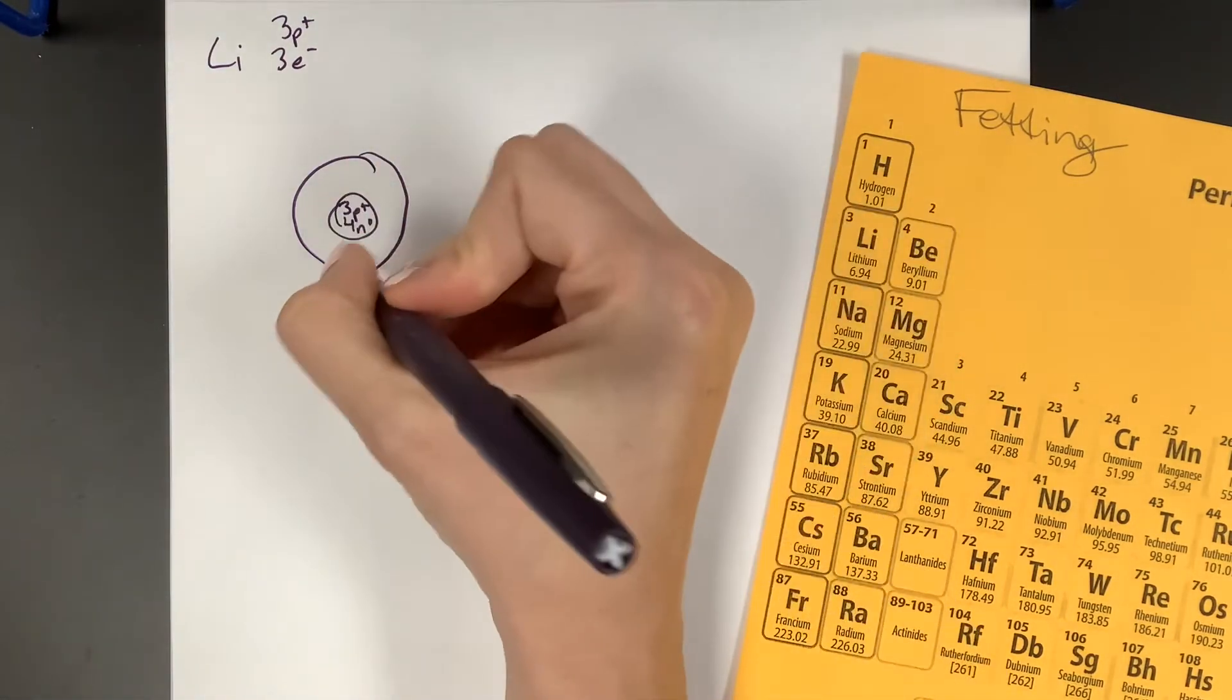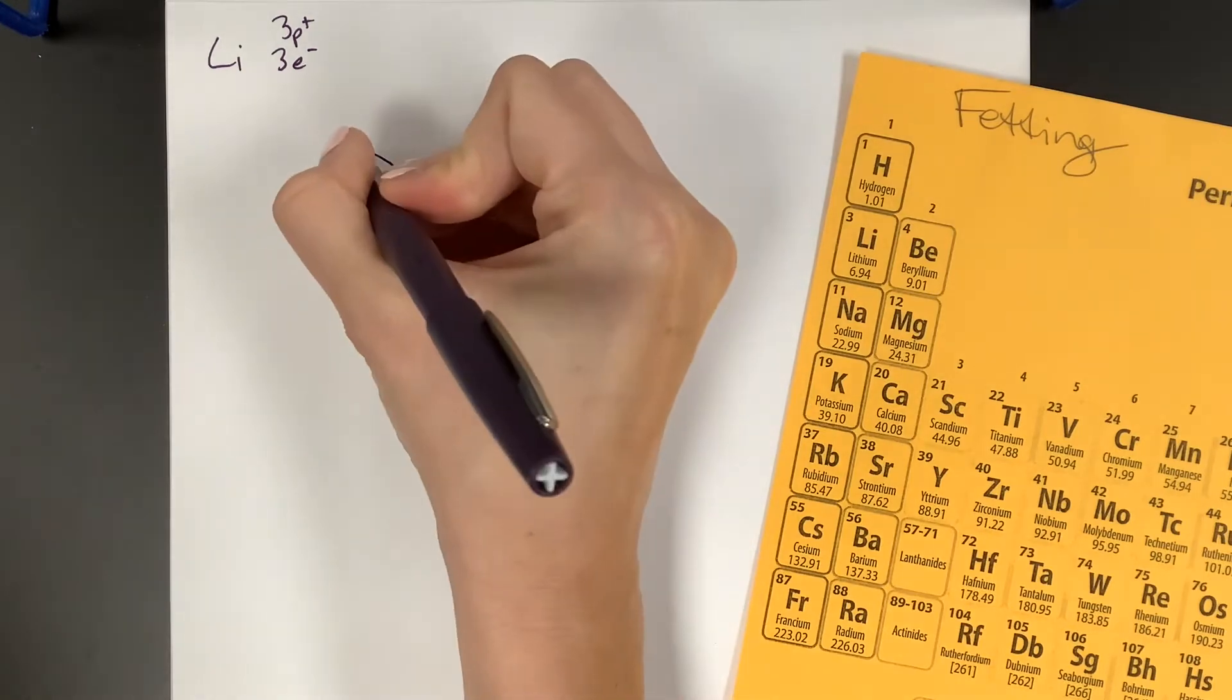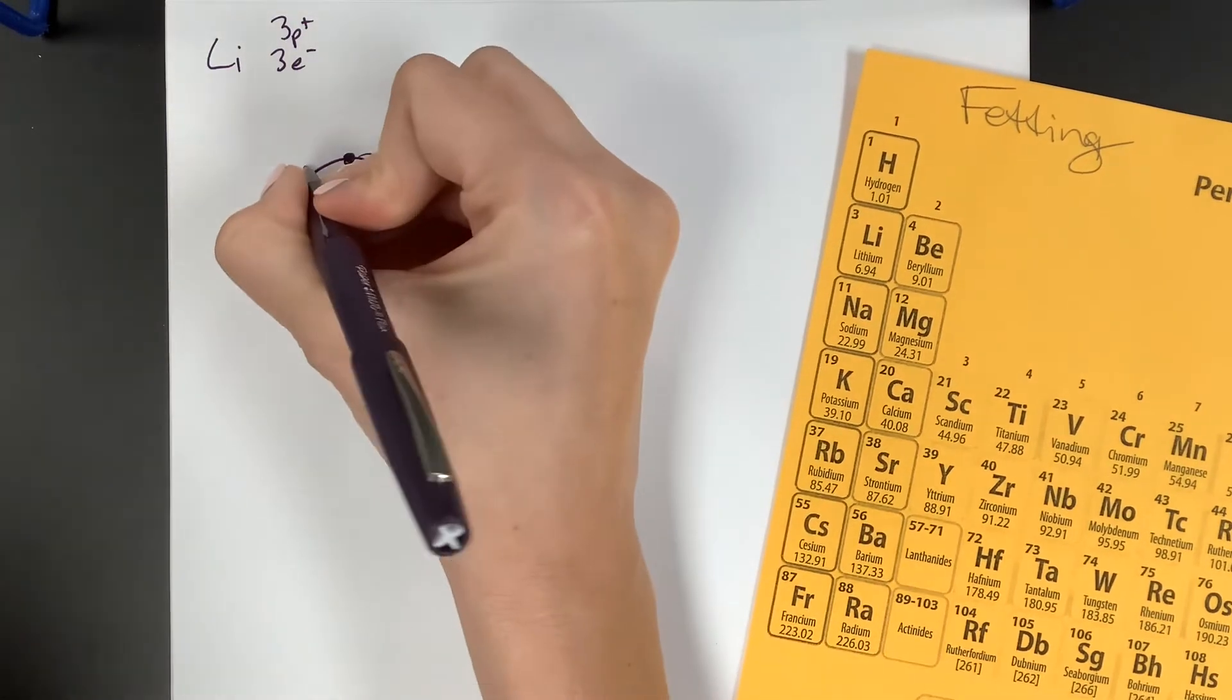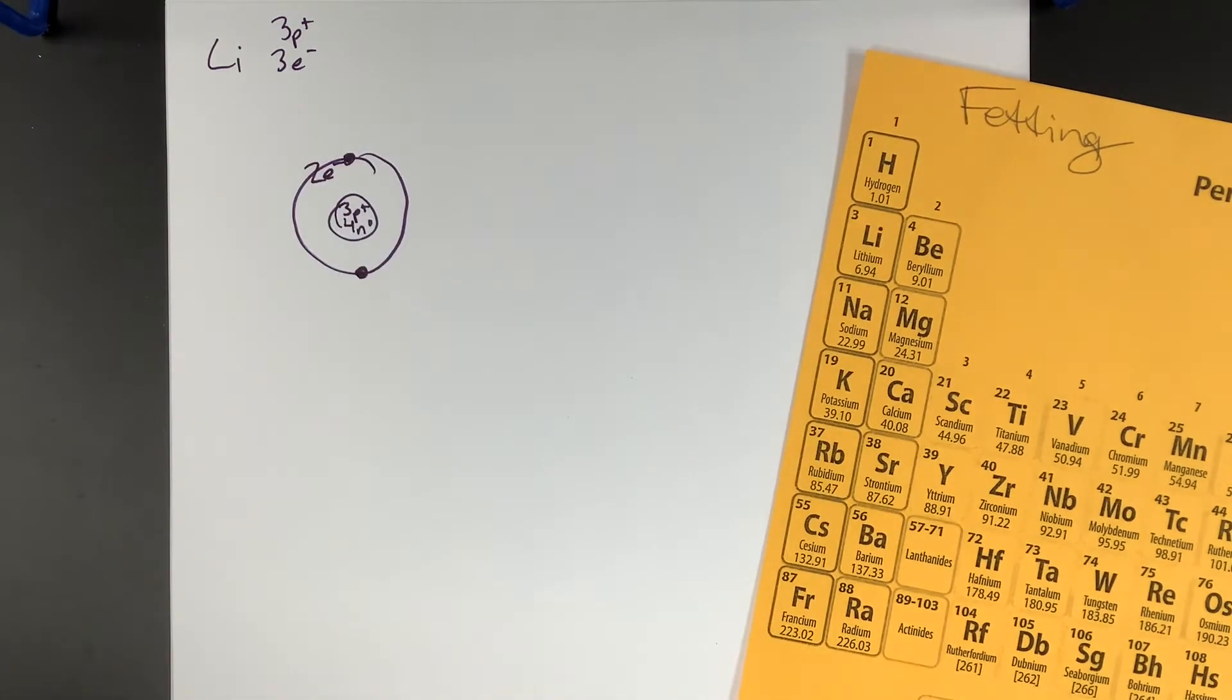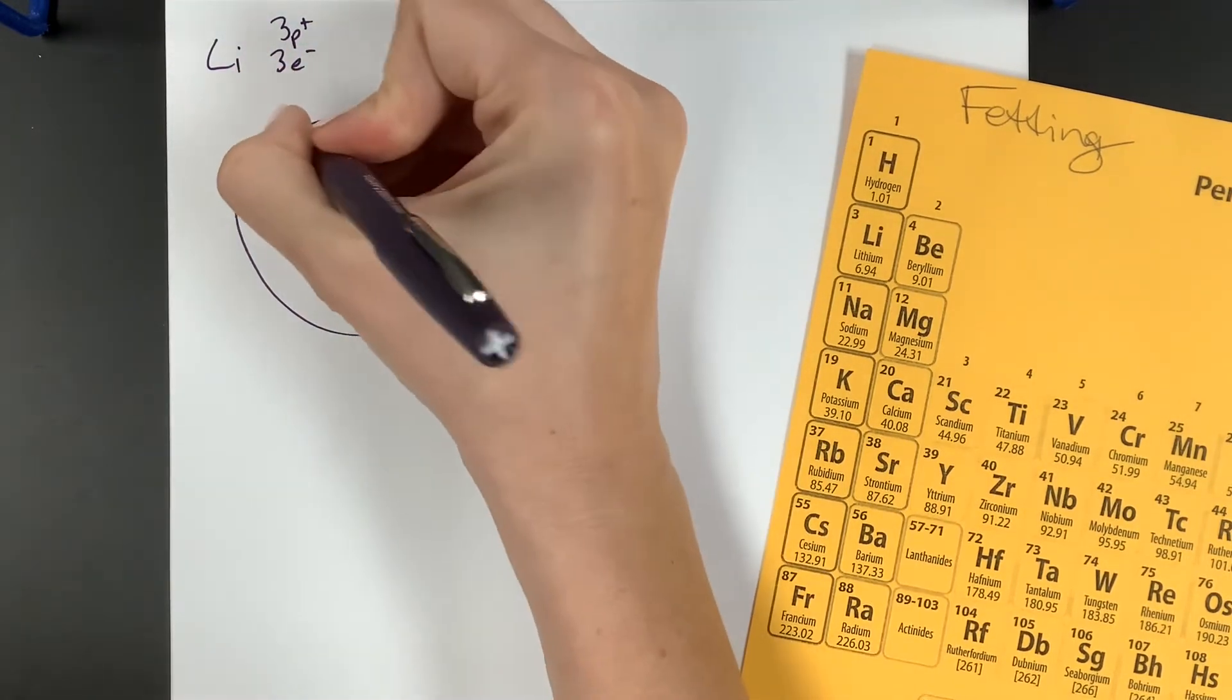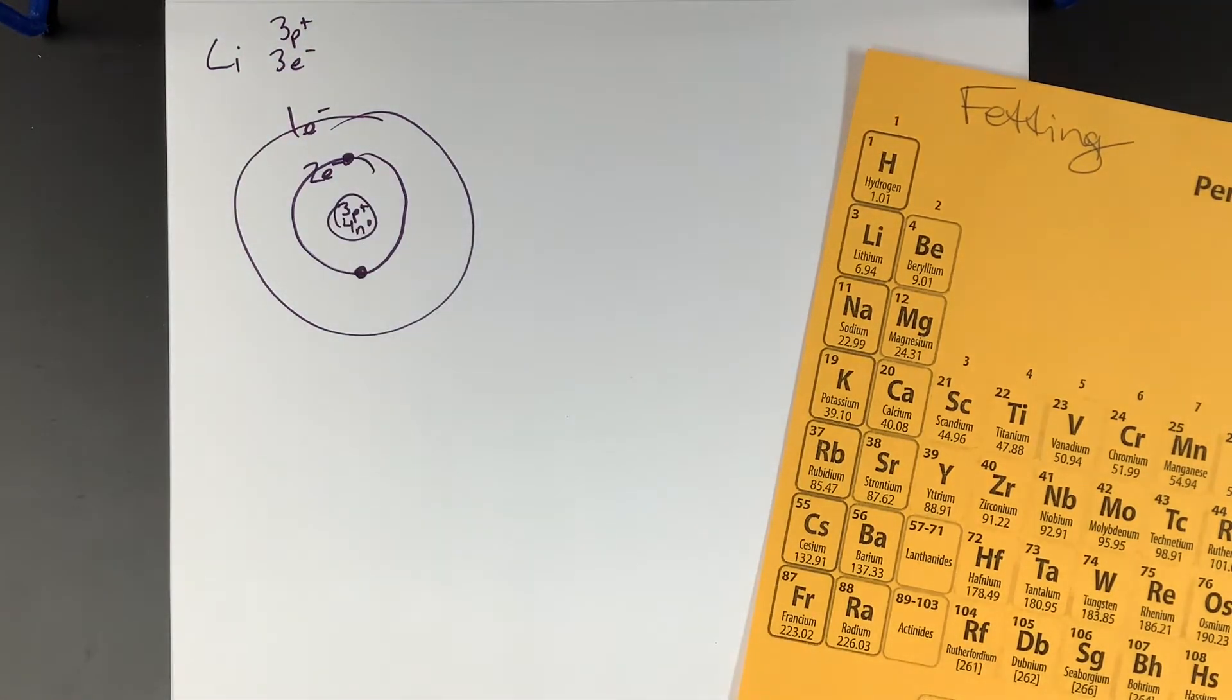We could draw this two different ways. We could draw the electrons as little dots on that shell. If you like doing that, and then you can see them and draw one at a time. I tend to just write it like that. I just write two electrons on it. Okay. So we've got two placed in the first shell. How many left? One. One. That's a Bohr model. That's it.